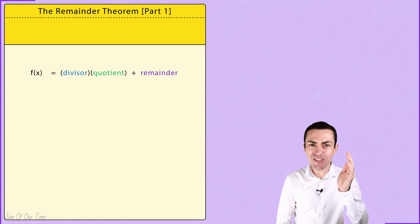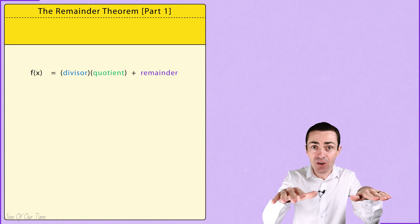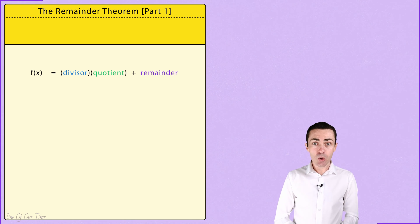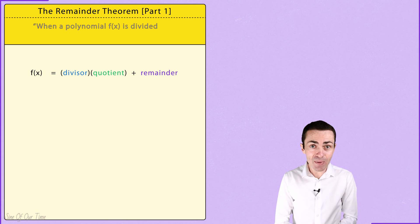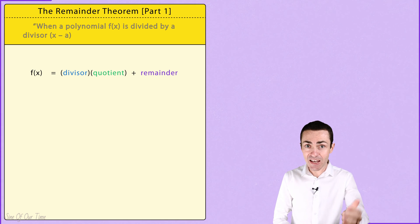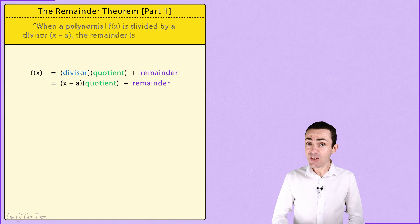It is precisely this thinking that forms the basis of the remainder theorem, which states that when a polynomial f(x) is divided by a divisor x minus a, the remainder is f(a).